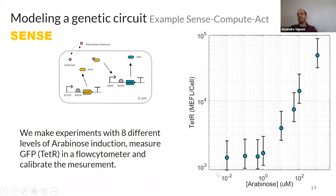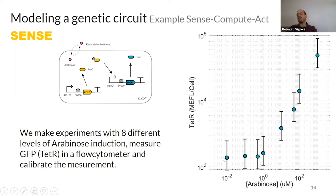We want to characterize the pTet promoter. From now on I will use theta, but remember it is getting its information from the GFP of the second construct we added. We make experiments changing the level of arabinose — in this case eight different concentrations from 10⁻² to 500 micromolar — and measure GFP in a flow cytometer with calibrated measurements.